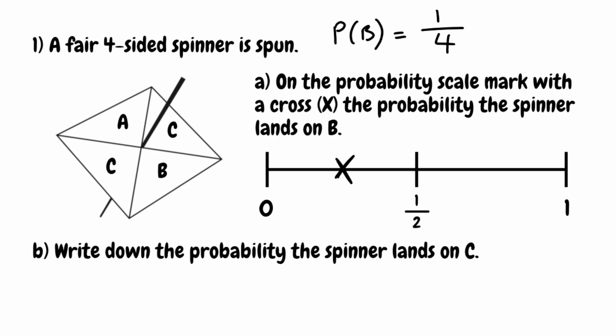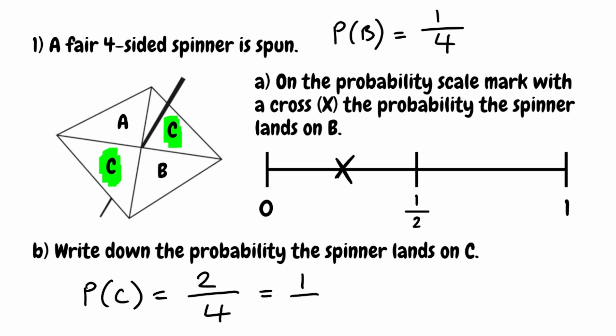For part B, we want to write down the probability that the spinner lands on C. We look for the number of successful outcomes — how many C's are on the spinner? We have one here and two here, so two successful outcomes. We put that over the total number of outcomes, which is four. So the probability of landing on C is two quarters, which we can simplify to one half.